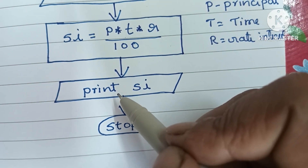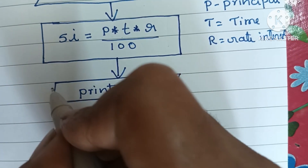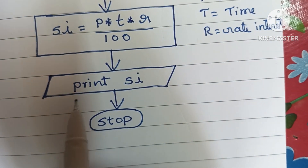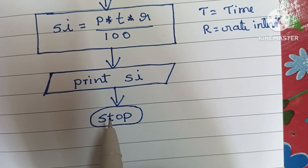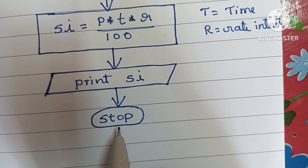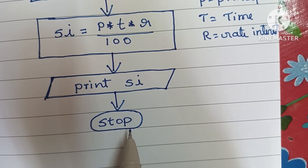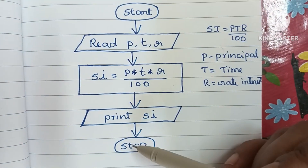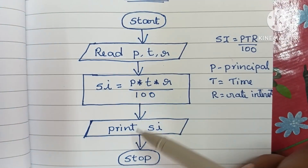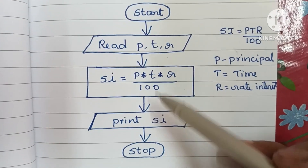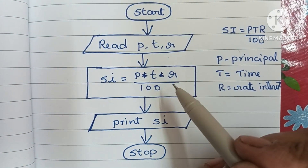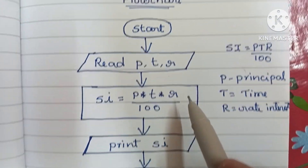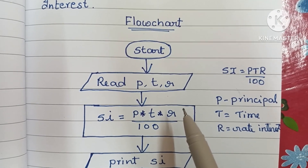Next, we print the output — print SI — using a parallelogram shape. Finally, we stop the flowchart using a stop statement written within an oval shape. In a flowchart: start and stop are written in an oval shape, input and output in a parallelogram shape, and process in a rectangular shape.